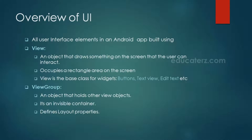For an overview of how Android looks, all user interface elements are built using Views and ViewGroups. A View is an object that draws something on the screen where the user can interact, and it occupies a small rectangular area. The base class for widgets includes buttons, TextViews, and EditText fields. A ViewGroup is a combination of all these view objects — it's an invisible container that holds views and defines layout properties.